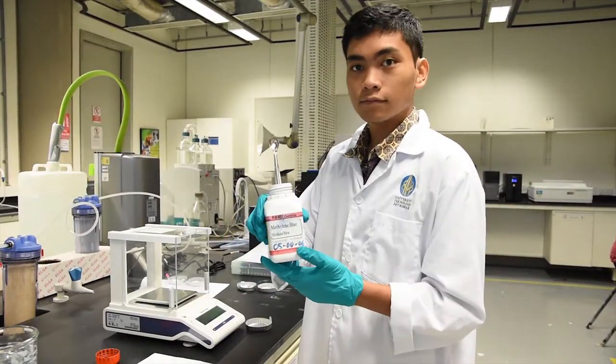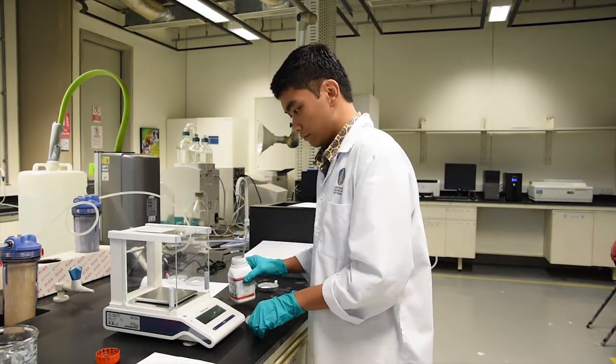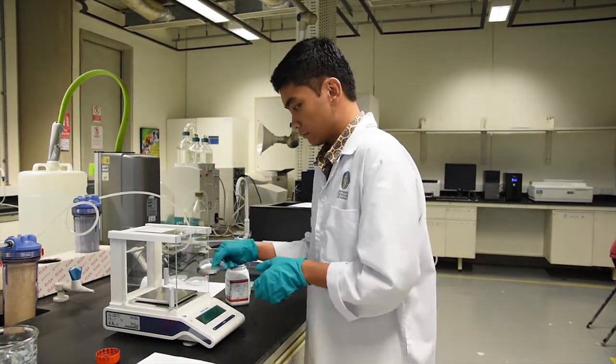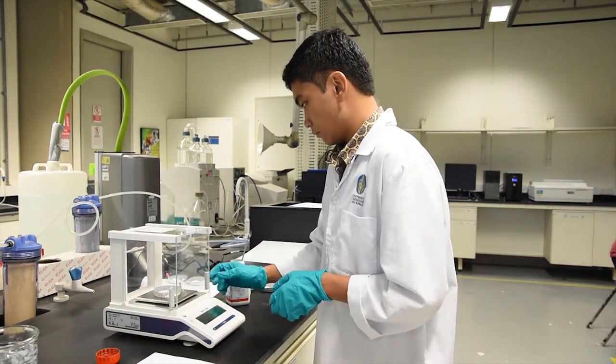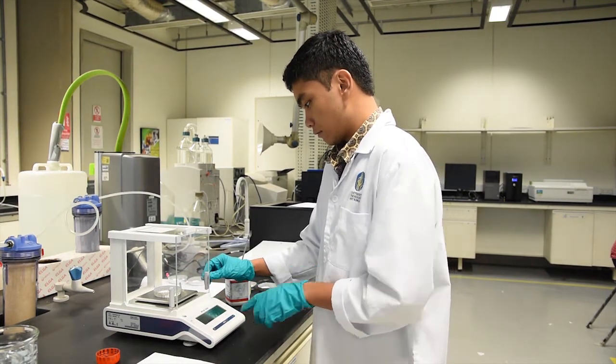In the third step, different concentrations varying from 10 to 50 milligrams per liter of methylene blue solution is then weighed on a weighing scale.